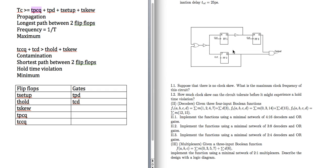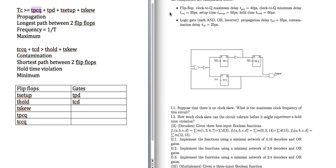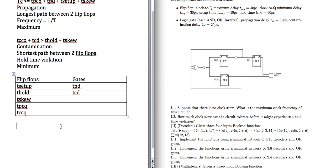We have t-pcq = 40 picoseconds, t-setup = 50 picoseconds, and no clock skew so we ignore that term. Now we have to find t-pd by looking at the longest path between two flip-flops. From flip-flop 1, we can go back to flip-flop 1, go to flip-flop 2, or go to flip-flop 3. From flip-flop 2, it can go back to itself or go to flip-flop 1.